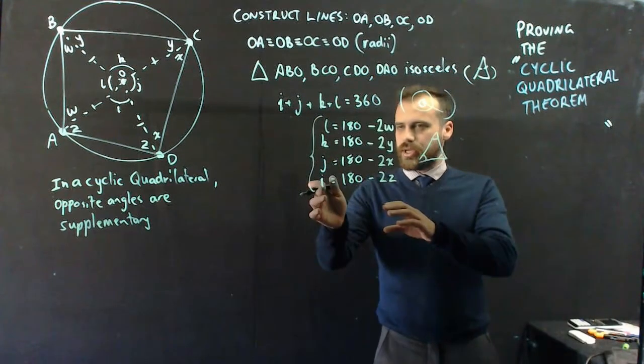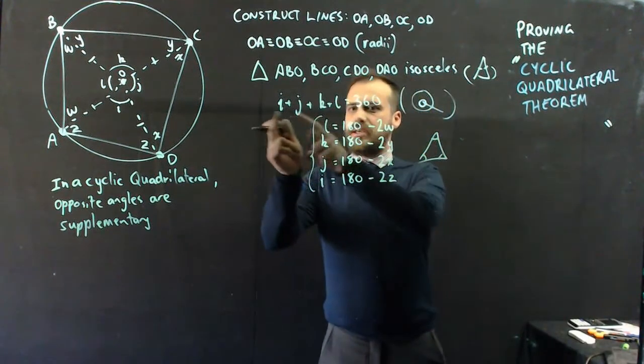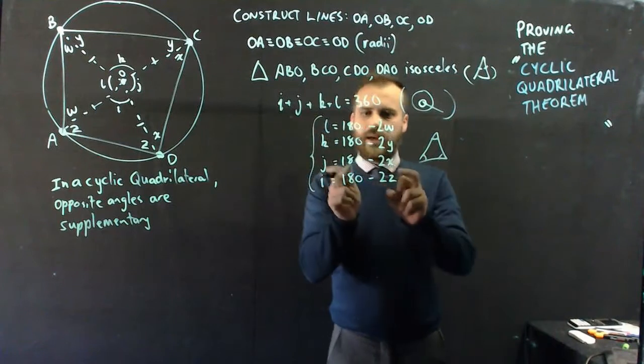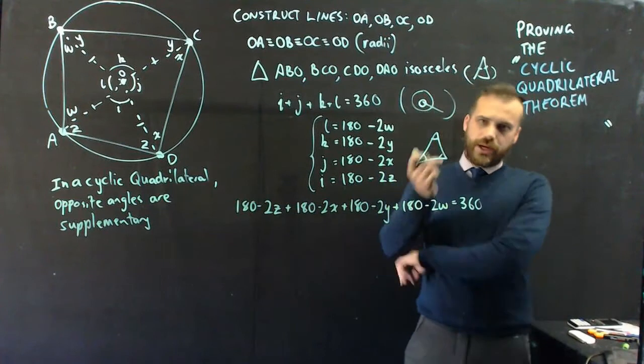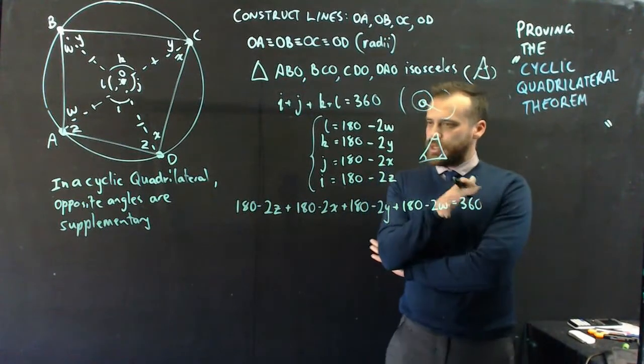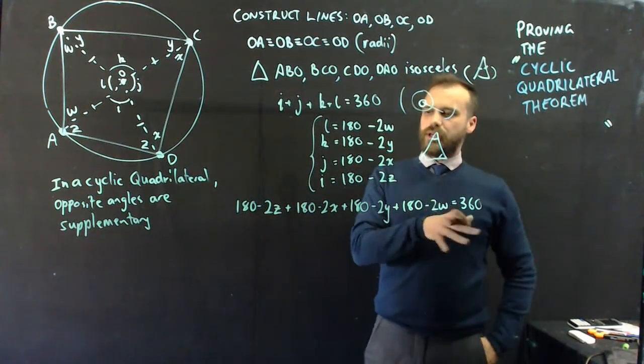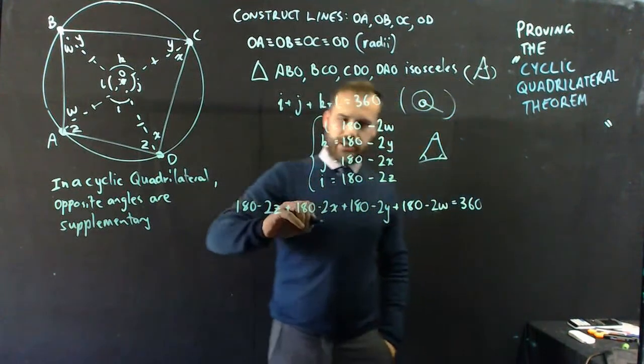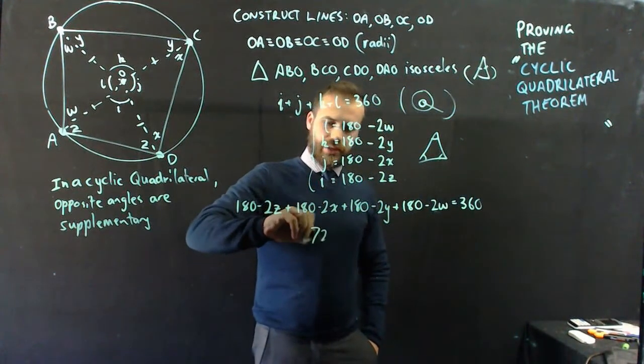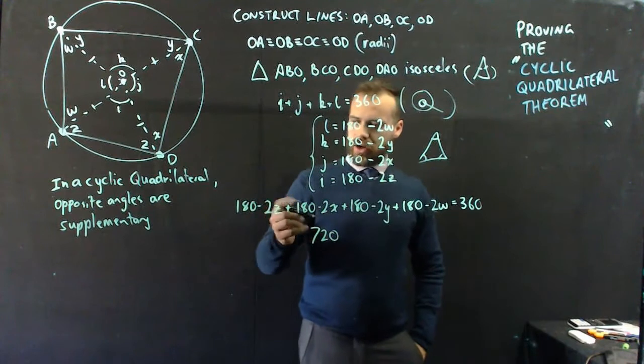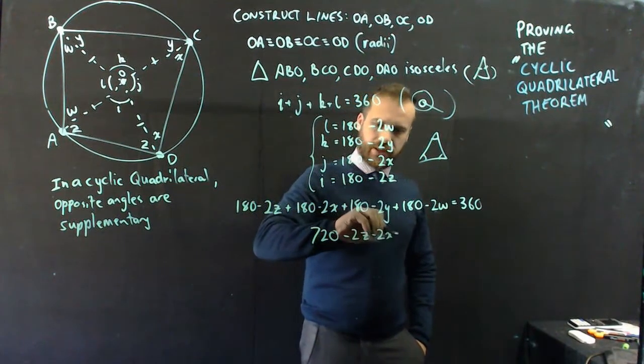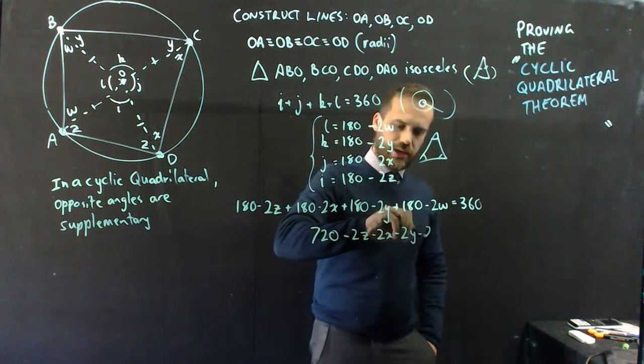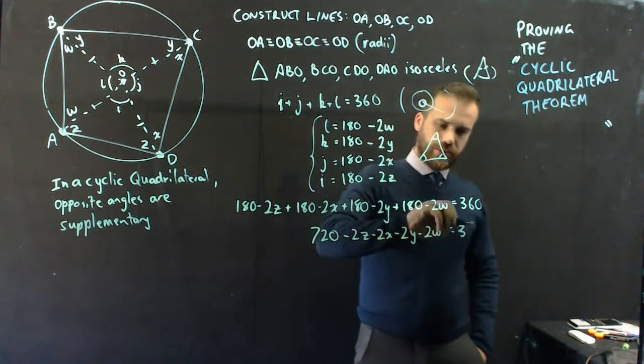All right, so I've made them all the subject. Now I'm going to put this in here, that in there, that in there, and that in there equals 360. All right, so now I have this big, long equation. Things are looking pretty wild. Now, the 180s can all get grouped together to make 720. And then I'm left with negative 2Z, negative 2X, negative 2Y, negative 2W equals 360.